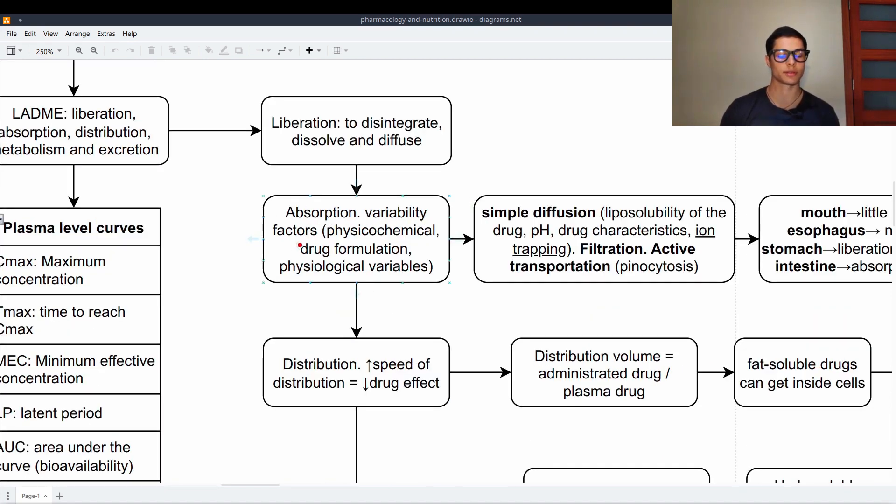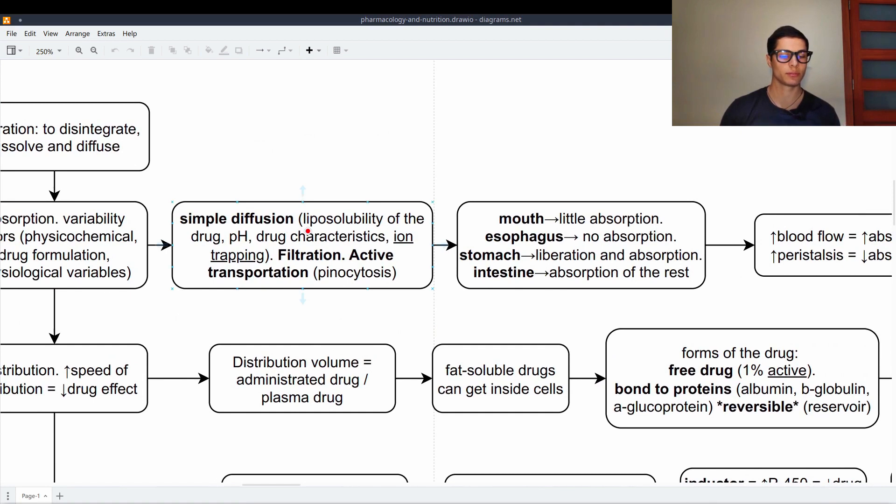Absorption, variability factors, such as physicochemical, drug formulation, and physiological variables. We absorb by simple diffusion, and the lipophilicity of the drug is very important. More fat soluble, easier to absorb. The pH, non-ionized form, is always better. Ion trapping is a phenomenon that happens when there's a difference in the pH, and because of the pKa of the drug, it gets trapped in one side of the barrier and cannot go into the other one because of an interaction with the pH. Filtration and active transportation, such as pinocytosis, are also ways of absorbing drugs.